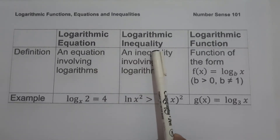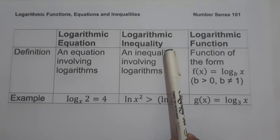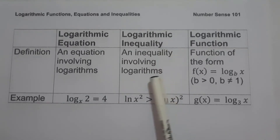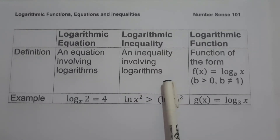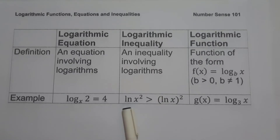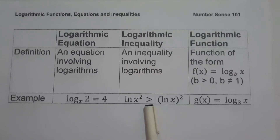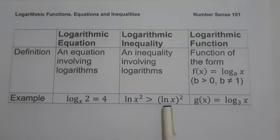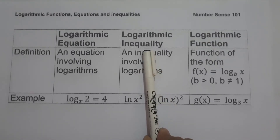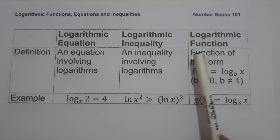When we say logarithmic inequality, it is an inequality involving logarithms. For example, ln x squared greater than quantity ln x raised to 2. Since we have an inequality involving logarithms and our inequality symbol is greater than, therefore, this one is an example of a logarithmic inequality.